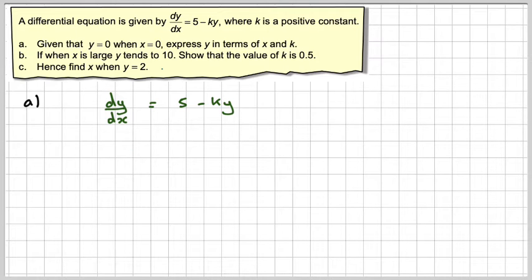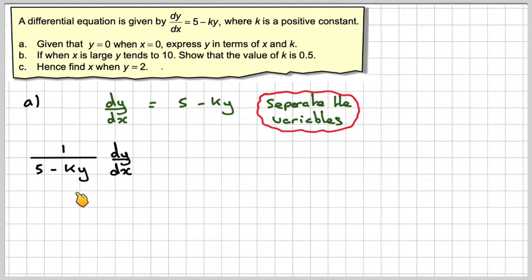We've got dy/dx equals 5 minus ky, and this is quite difficult. We need to separate the variables, but you need to think of this as 1 times 5 minus ky, and rearrange it as 1 over 5 minus ky dy equals 1.